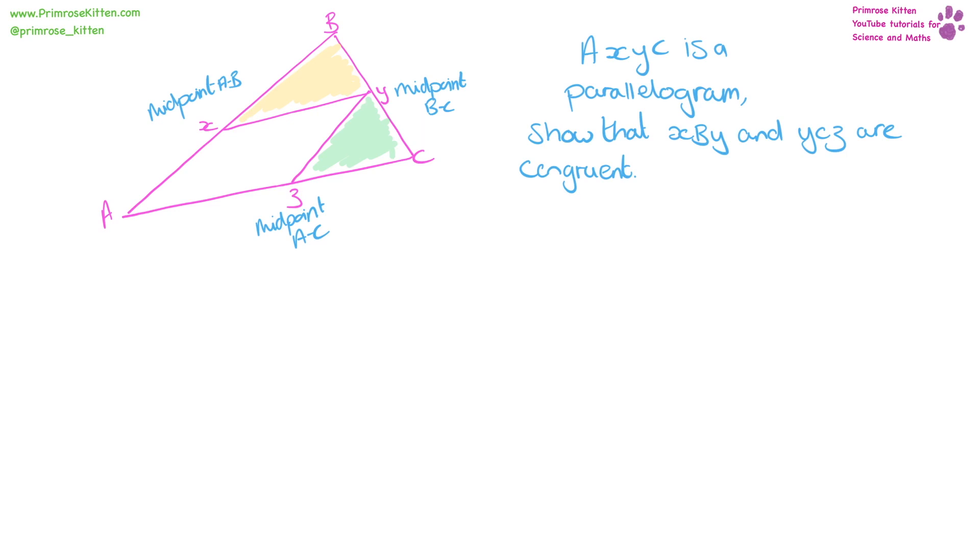So the first thing we can say is that if Y is the midpoint, we can say that BY is equal to YC. Now because we can say that, what I'm going to do is give that a color and then give that a different color, and color those lines in. So I know that this line here is the same as this line here, and that's one of our points that I've proved.